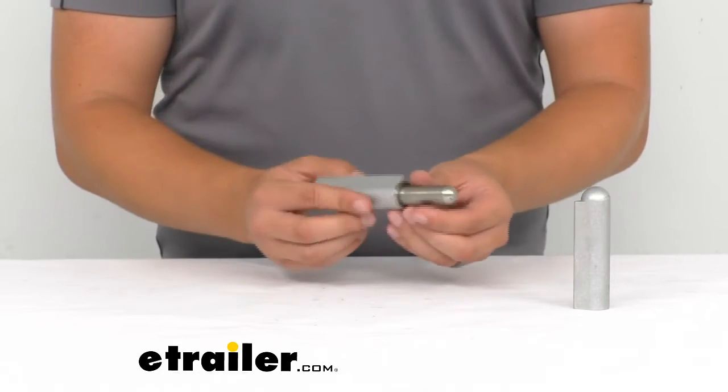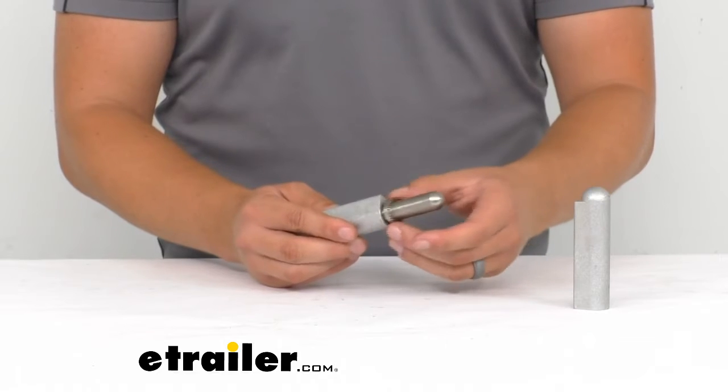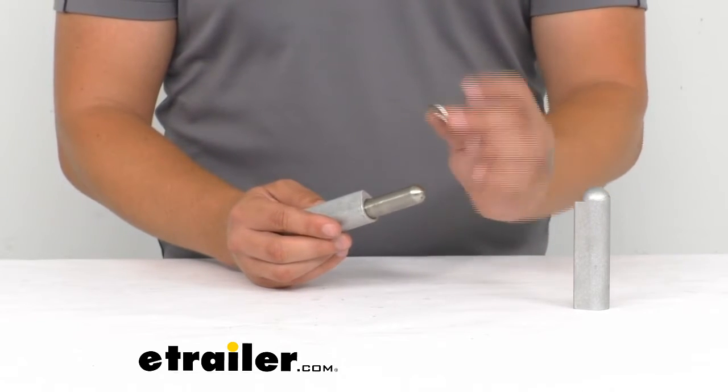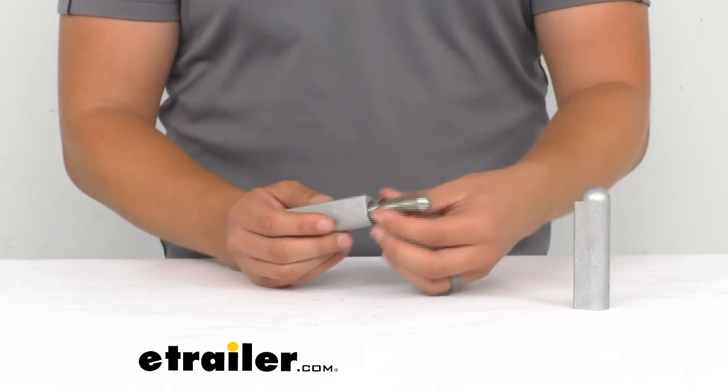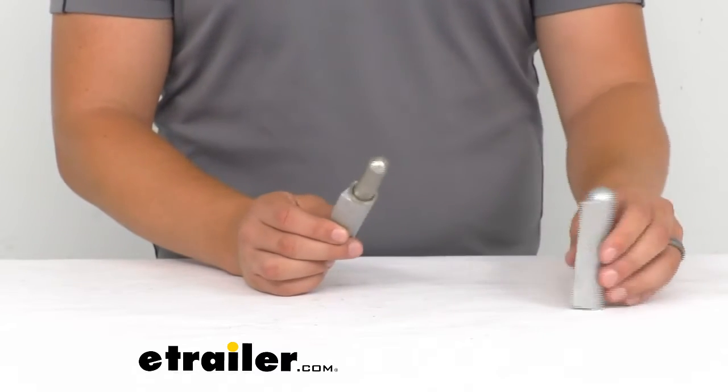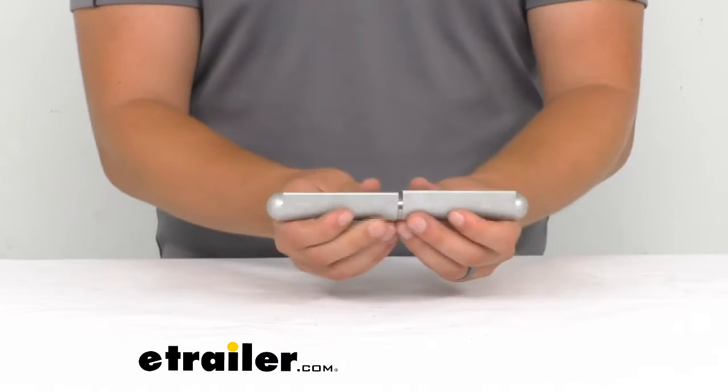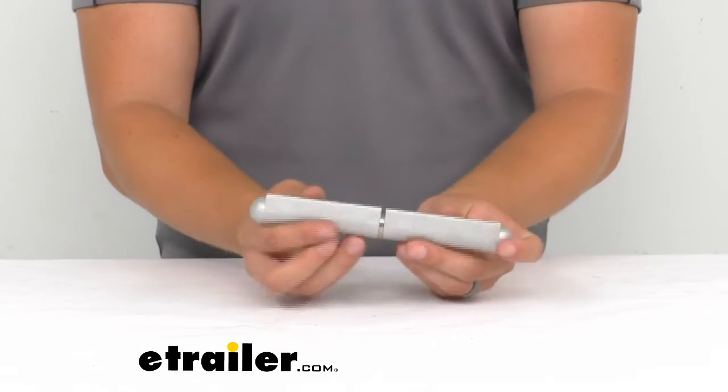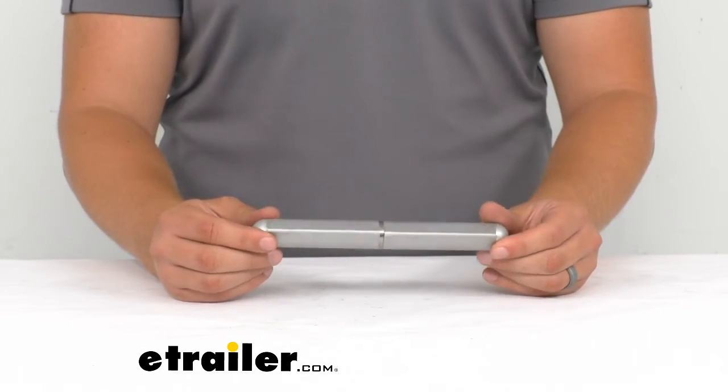And on the inside here where we've got our pin and bushing, those guys are going to be stainless steel. So again, not having to worry about any sort of rust or corrosion with those. So you can count on this hinge staying in really good condition, operating smoothly over a long period of time.